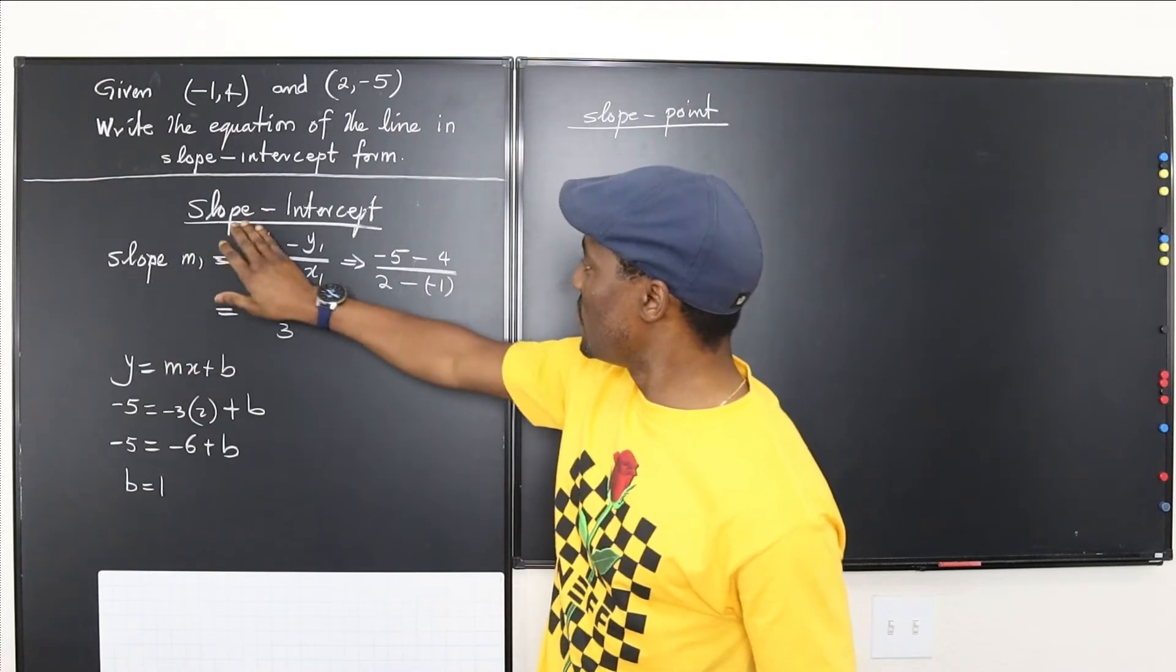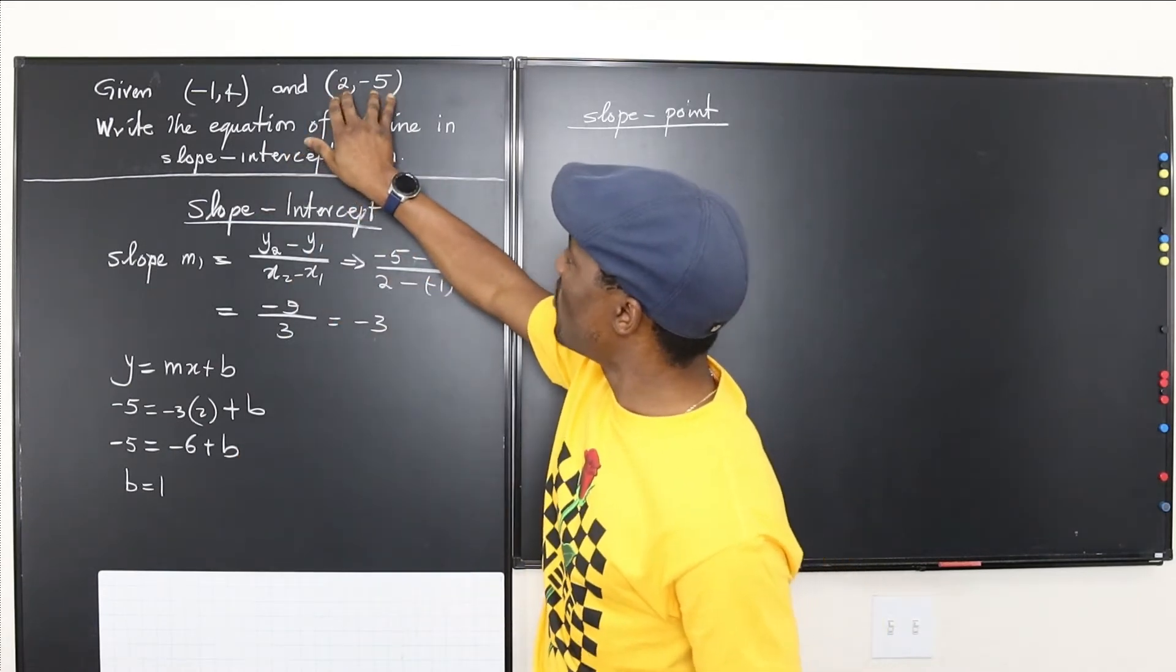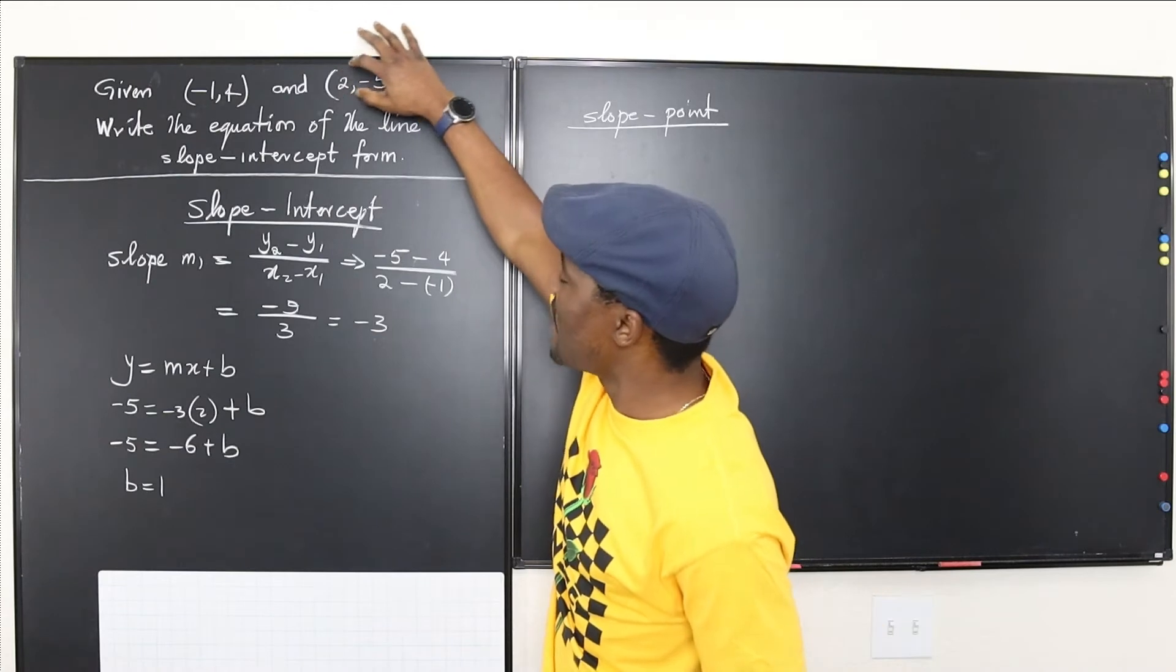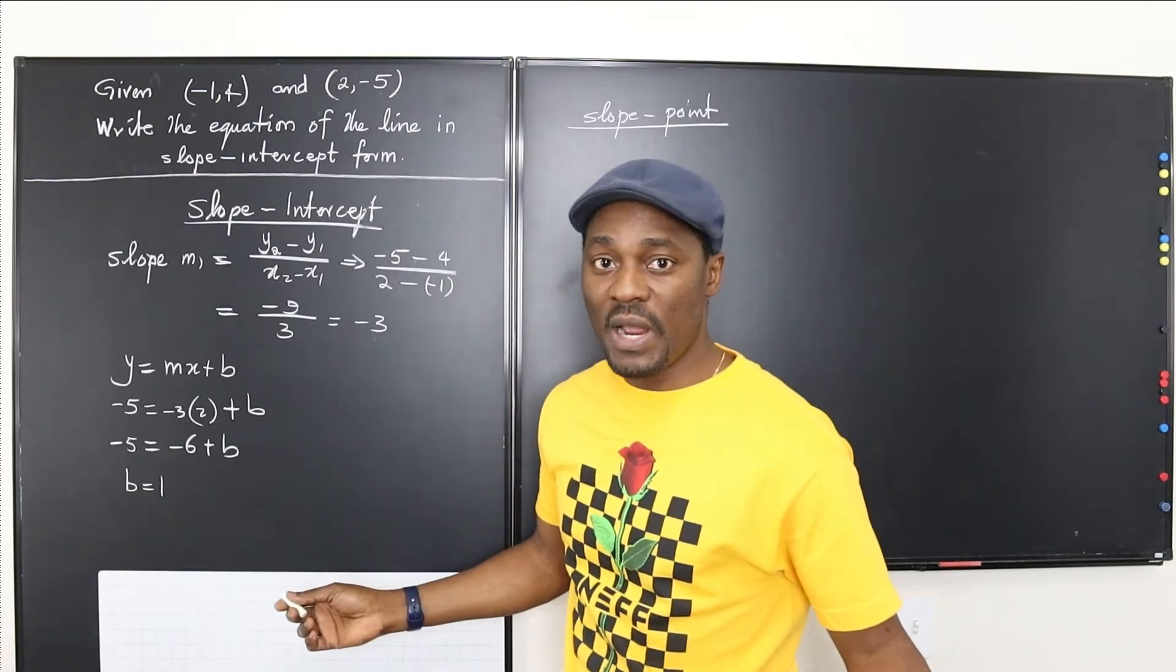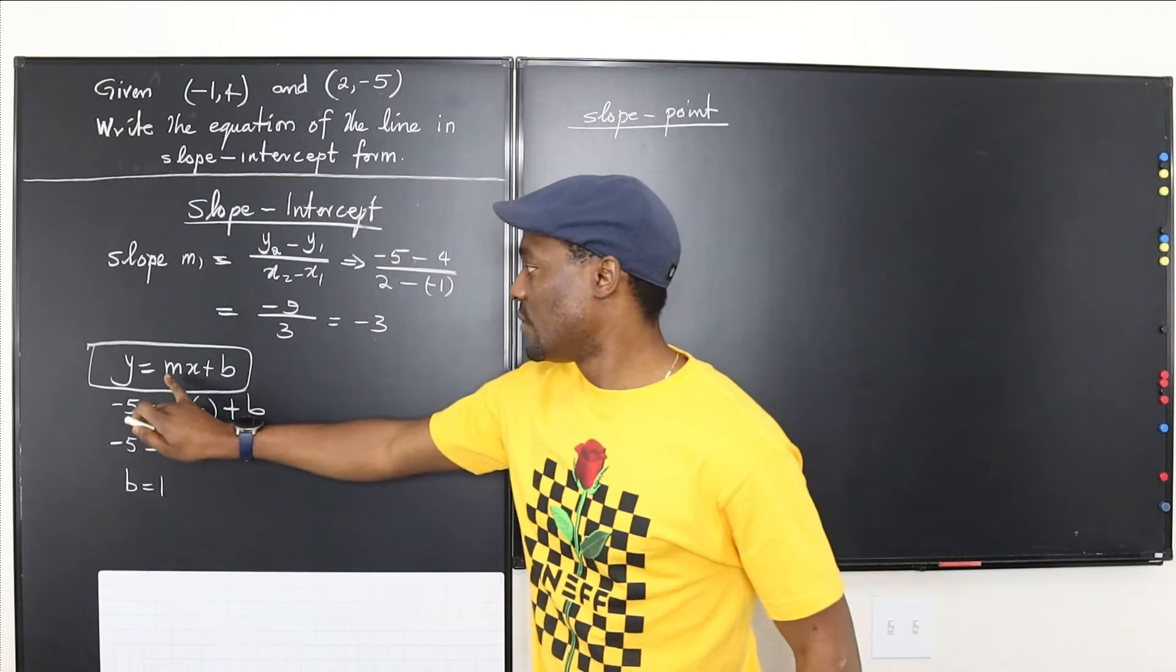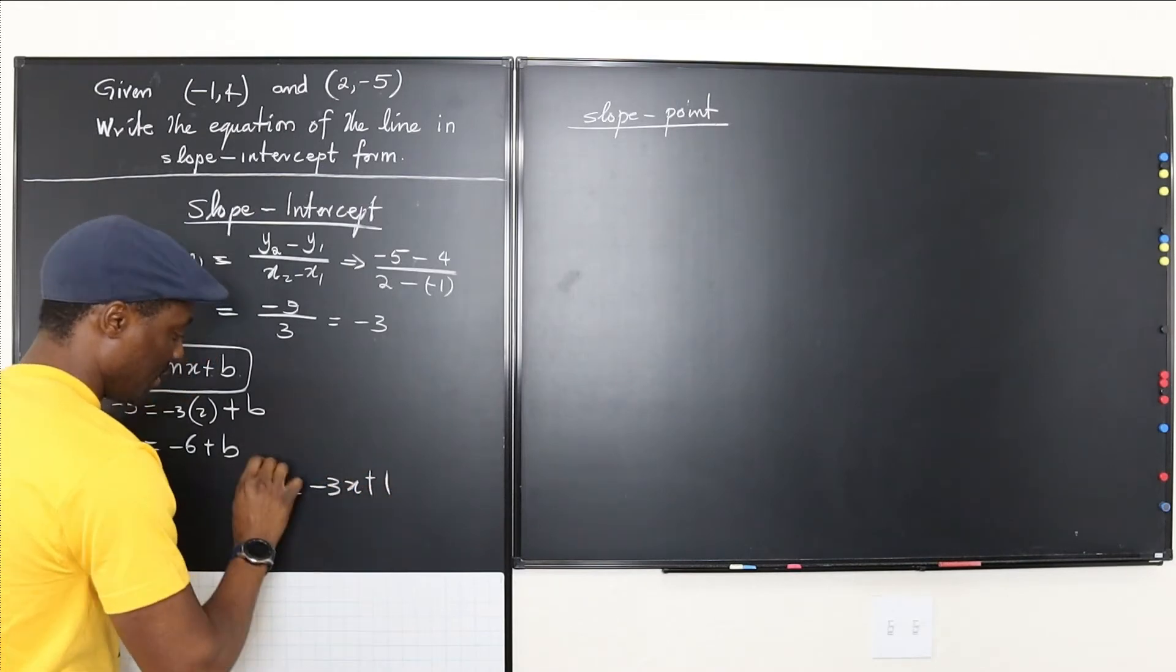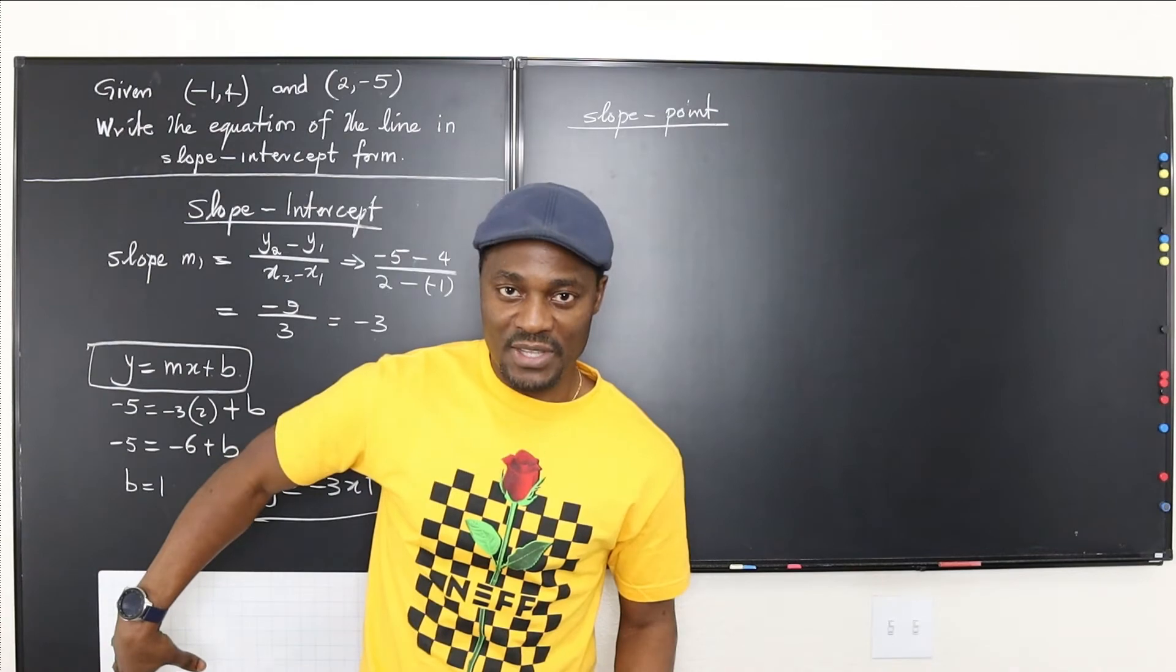The only thing you need to find if you use the slope-intercept form after you get the slope is to just know what b is by substituting x and y from one of these points. Just pick a point and be consistent. Don't pick x from here and then y from here. You have to stick to the same coordinate pair that you're given. So if you're given 2 negative 5, you use 2 and negative 5 for x and for y. Now we have our equation already. Remember, this is the equation that we're looking for. The two things that are constant in any straight line are the slope and the intercept. So we just write y equals negative 3x plus what is b plus 1. So our equation y equals negative 3x plus 1. That's the equation of the straight line that passes through these two points if you use the slope-intercept form.